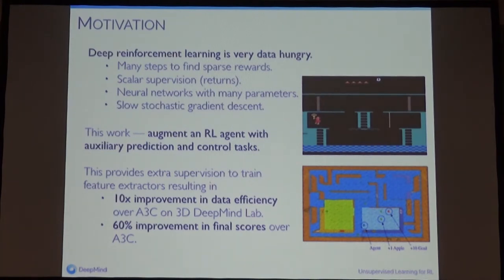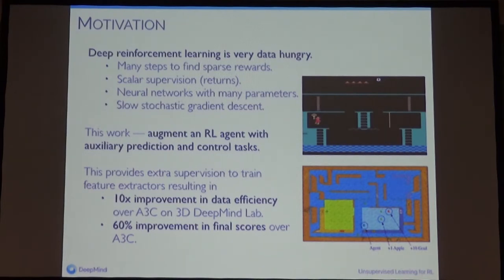We also have really cool applications like cooling down Google's data centers. While on some restricted domains you can design data-efficient reinforcement learning algorithms, more general deep RL algorithms such as DQN, Advantage Actor-Critic A3C, or DPG are really, really data hungry.